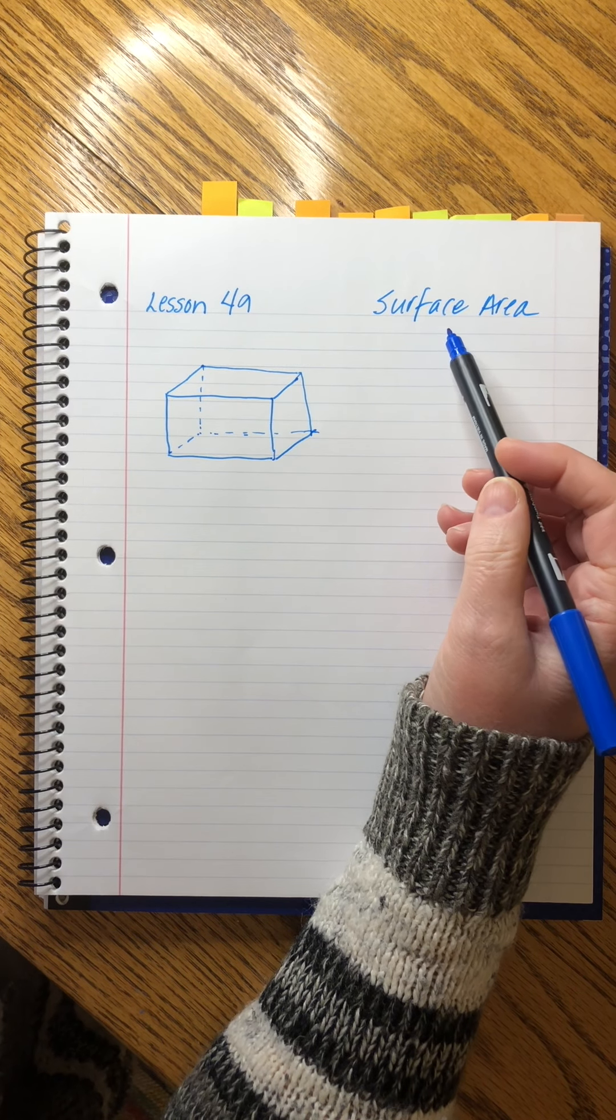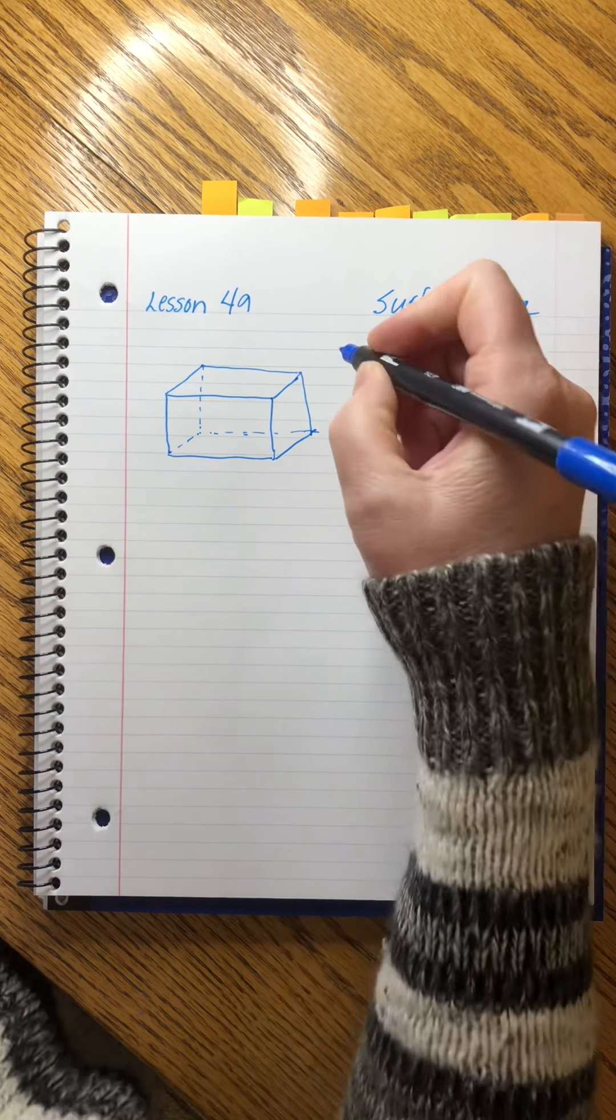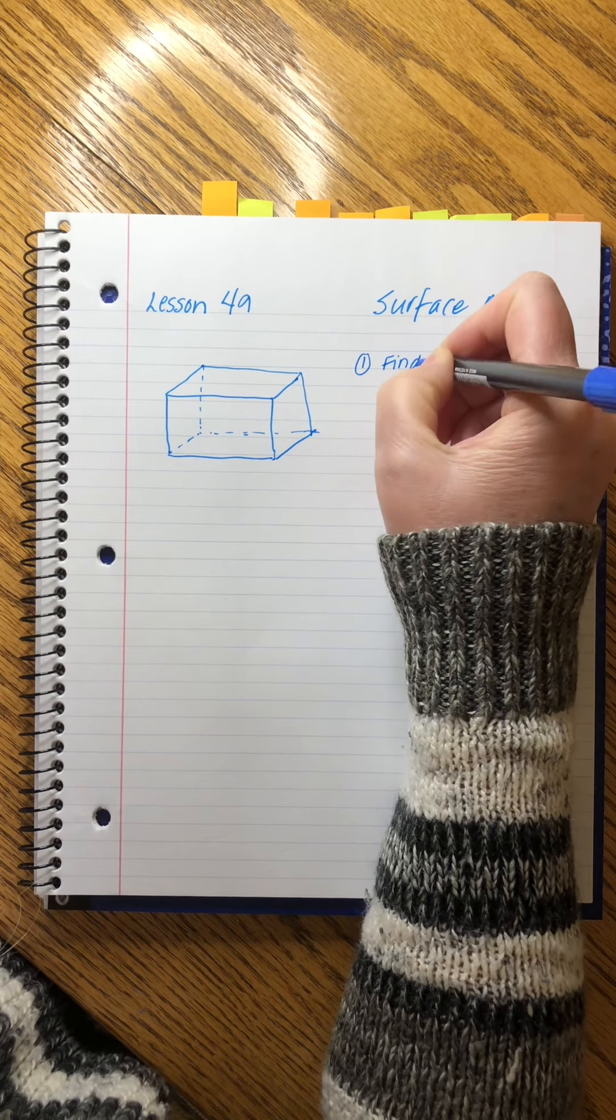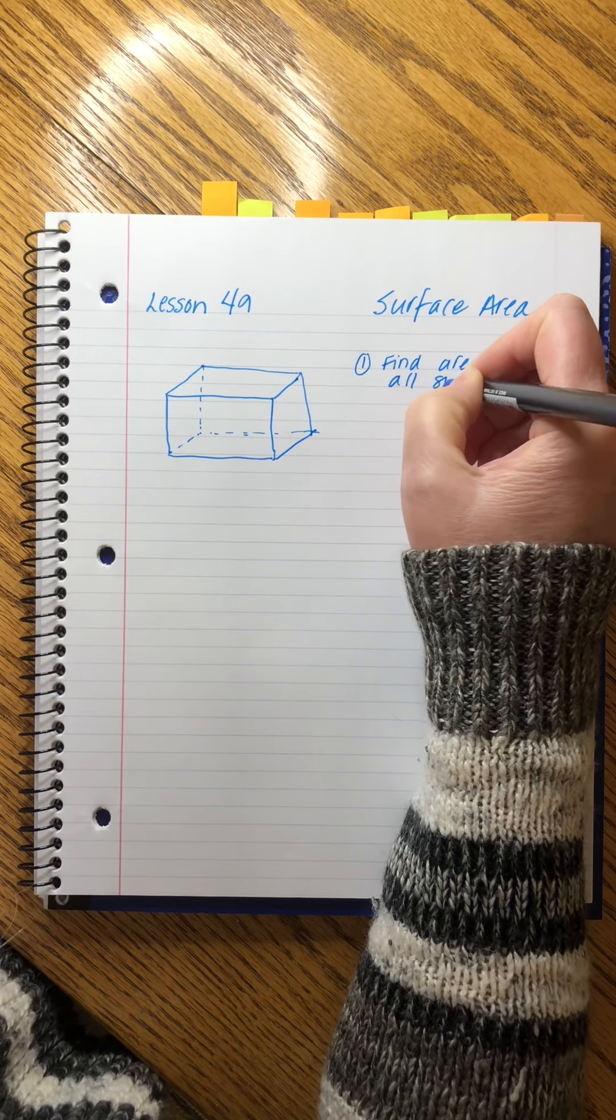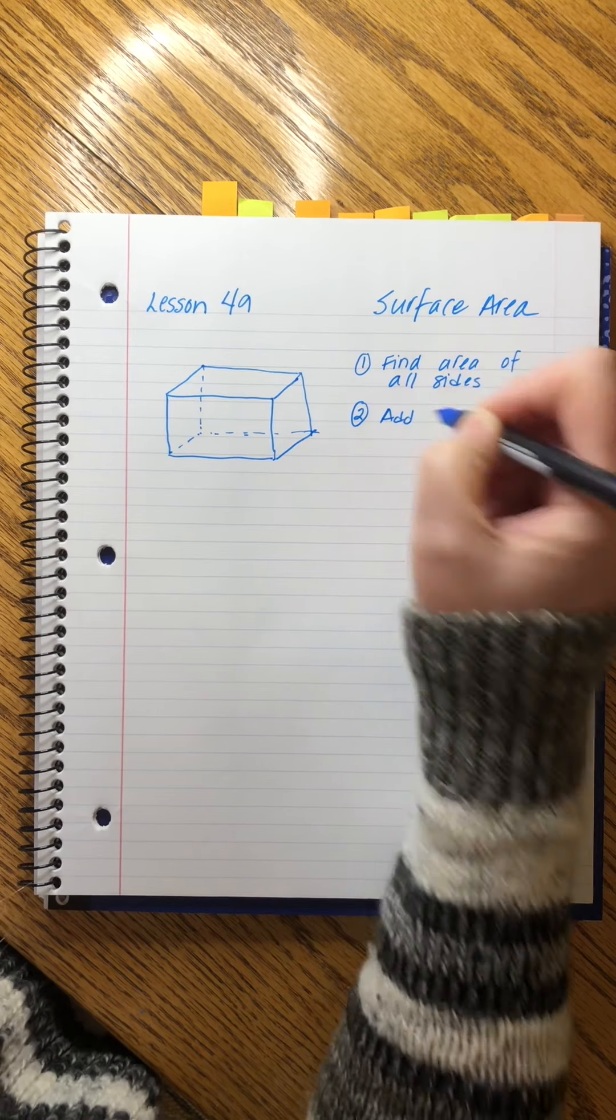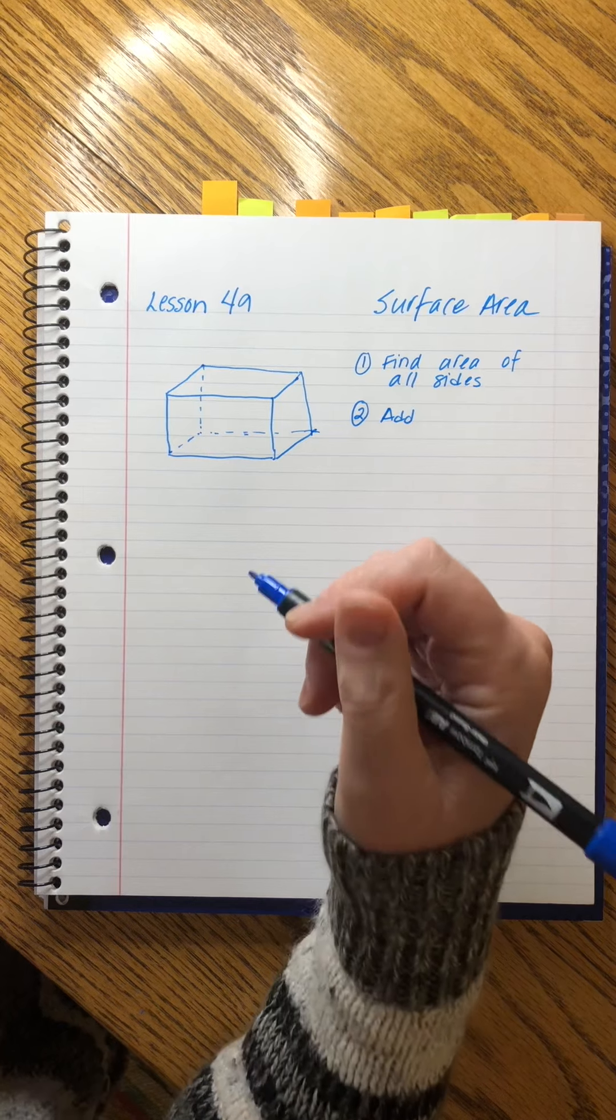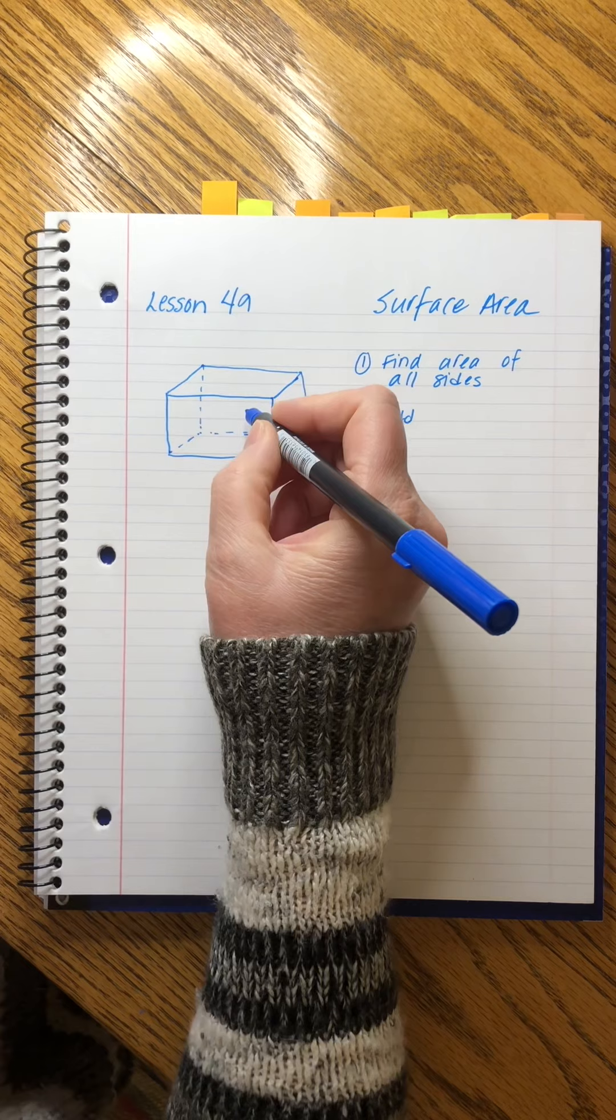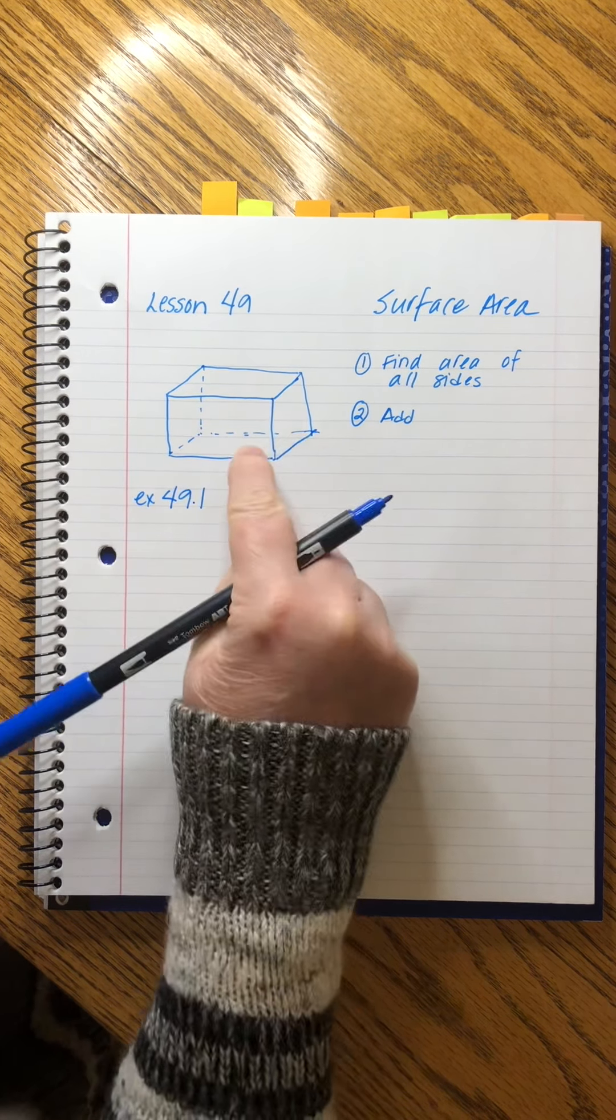Now when we're calculating surface area, there really isn't a clean formula that we use. It's a two-step process: first of all, we find the regular area of all the sides, and then we add. Okay? So there isn't a formula per se—we're using the formulas we already know. Sometimes it gets a little hairy, but today our problems are going to be quite easy.